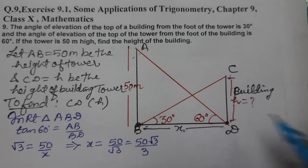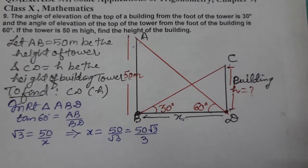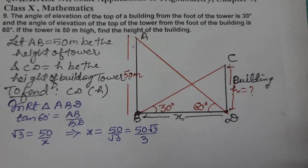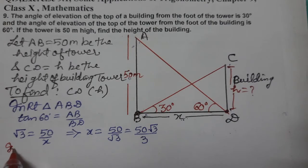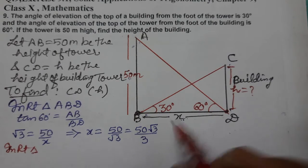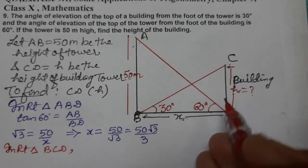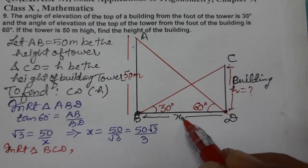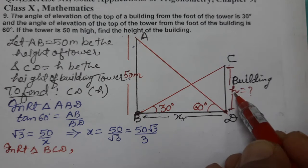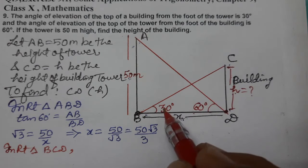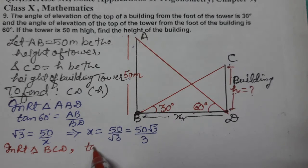In right triangle BCD, let's consider another triangle BCD. Isme bhi wapas wahi karna hai. Ye given hai, ye given hai. Ab x aapke paas given mein, aur ye hume nikalna hai. To perpendicular upon base. Angle kitna - 30 degree. To tan 30.